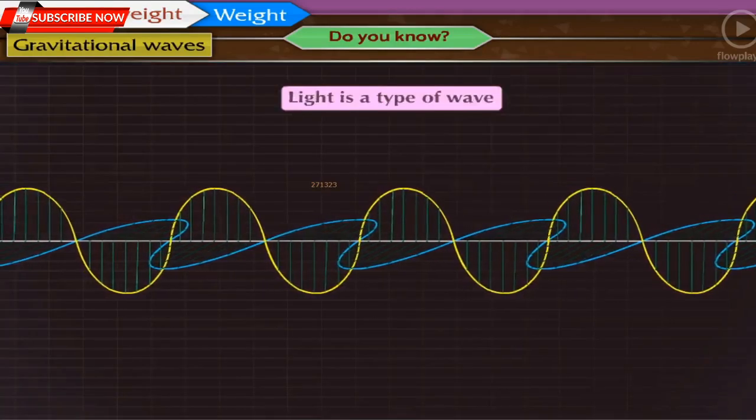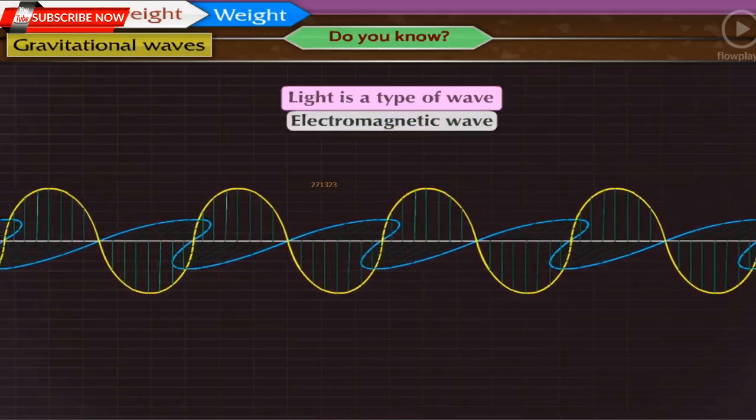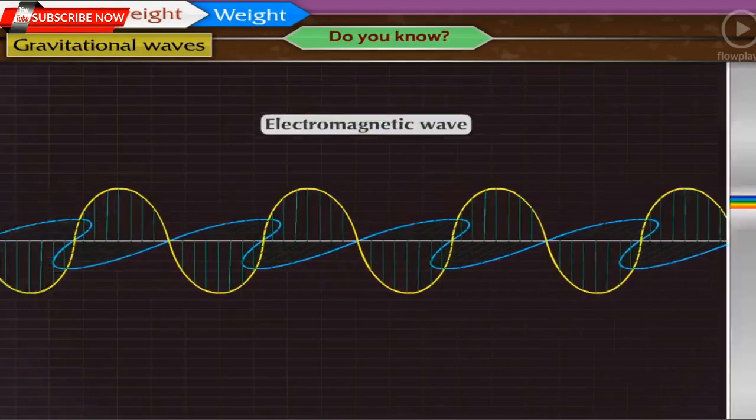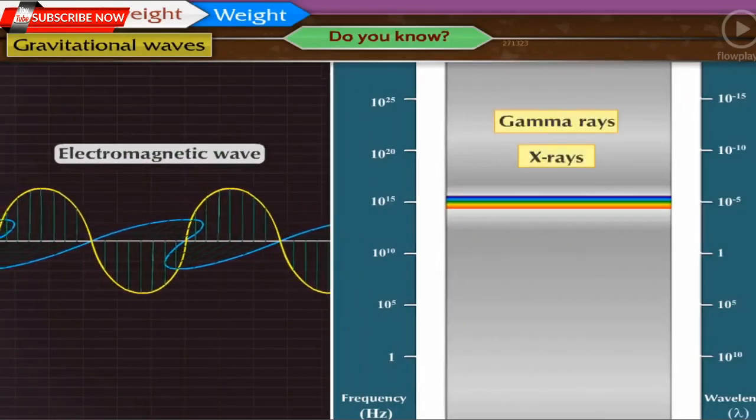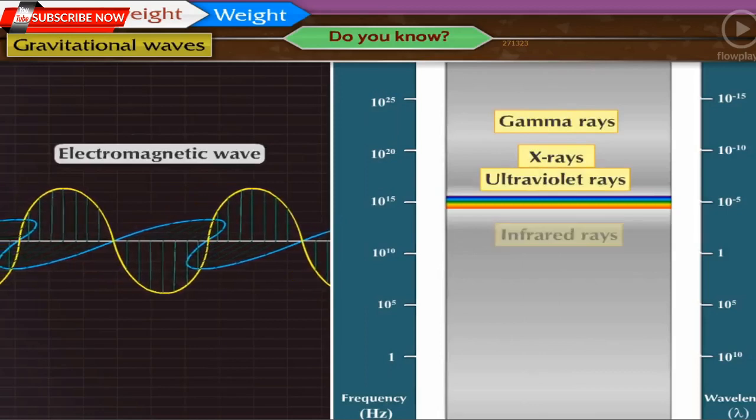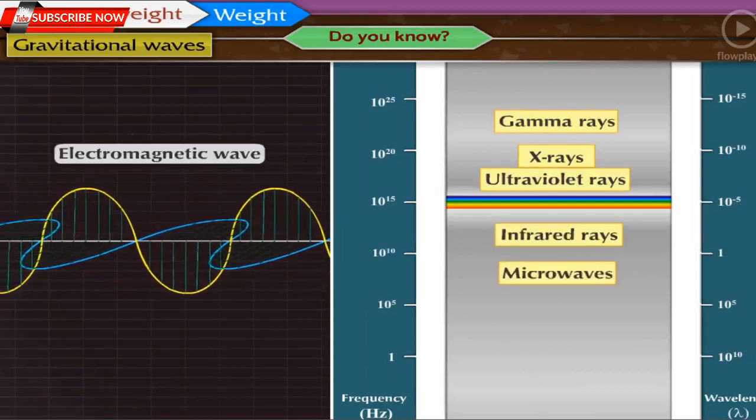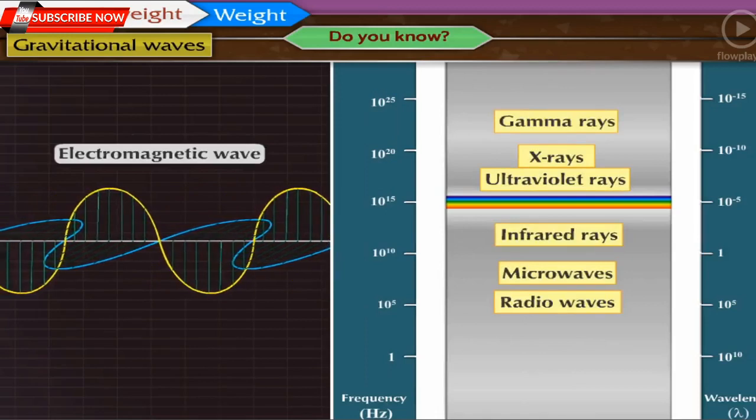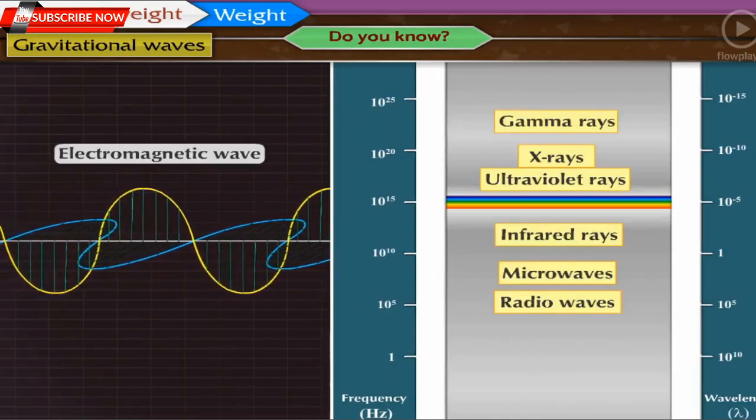Light is also a type of wave called the electromagnetic wave. Gamma rays, X-rays, ultraviolet rays, infrared rays, microwave and radio waves are also different types of electromagnetic waves.